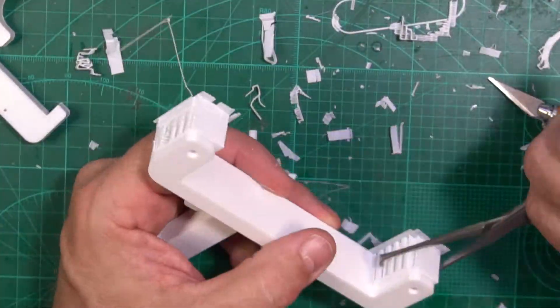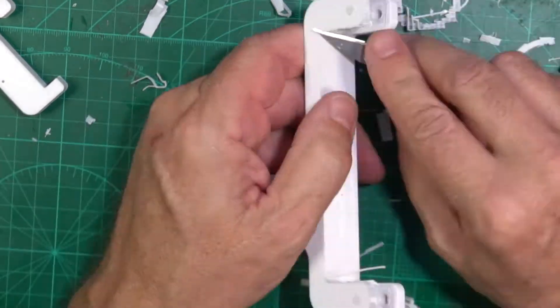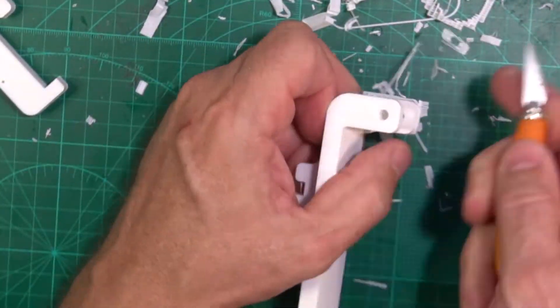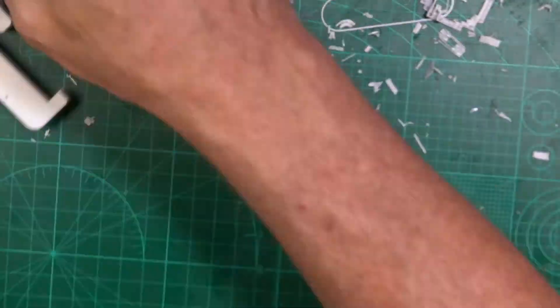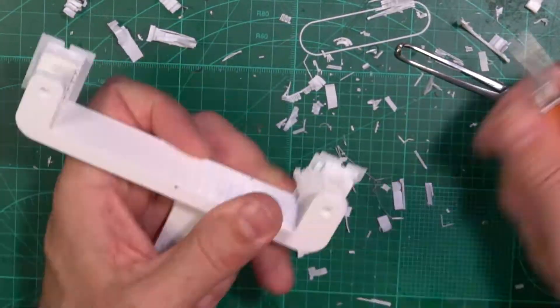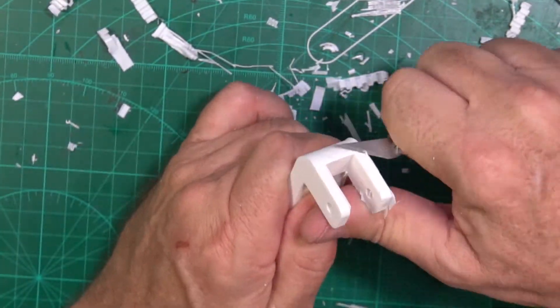I also did have to use supports in the frames because it's such a big overhang, so you definitely have to use supports there. The only other thing I did use was a two or three brim around the small split spacers because they tended to come unstuck from the print bed.